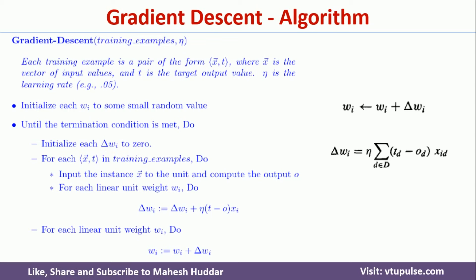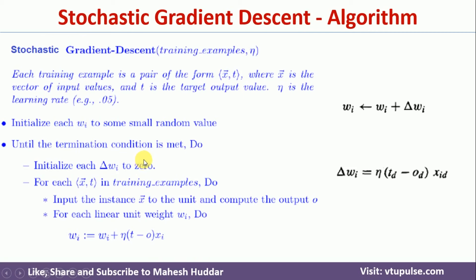Coming to the stochastic version of gradient descent algorithm — before we go there, let us first see the disadvantage of the previous approach. The disadvantage is that the change in weight is calculated by considering all examples. For example, if you have a thousand training examples, you have to process all thousand examples to get the change in weight, then check whether the termination condition is satisfied, and if not, repeat the whole process again. That will take a lot of time, and sometimes it may not converge to the final weights. To avoid this, there is another algorithm called the stochastic version of gradient descent. The algorithm looks exactly similar to the previous one. The only difference is that w_i is calculated by considering the error with respect to the current example only.